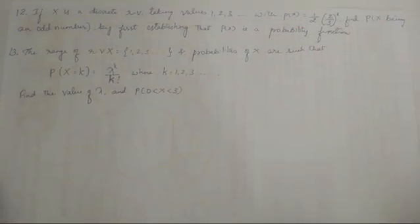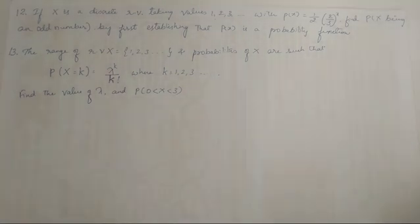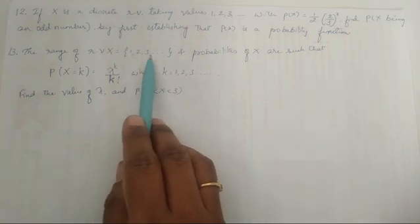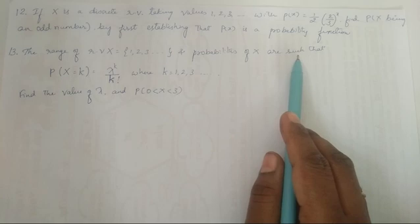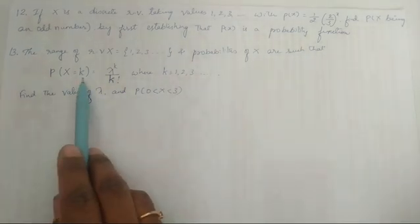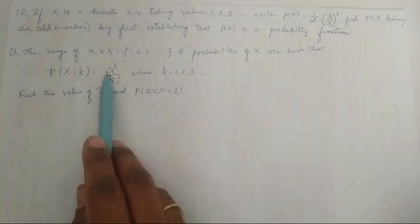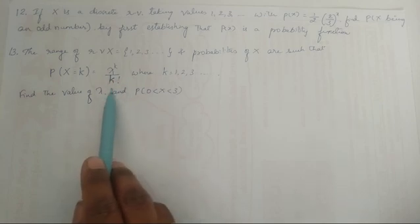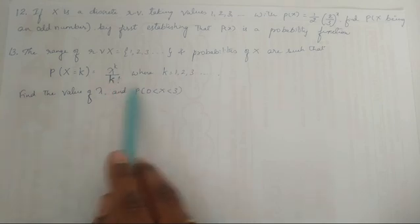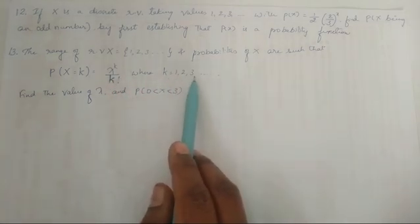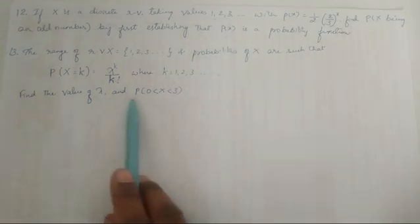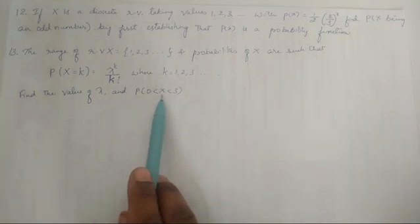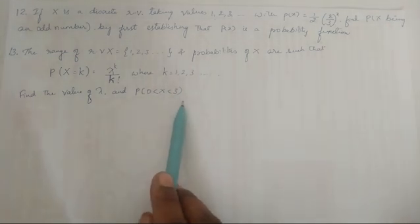The 13th question: the range of random variable x is 1, 2, 3 and so on, and the probabilities are such that p(k) equals λ^k divided by k factorial, where k varies from 1, 2, 3 and so on. Find the value of λ, and then find p(x) where x lies between 0 and 3.